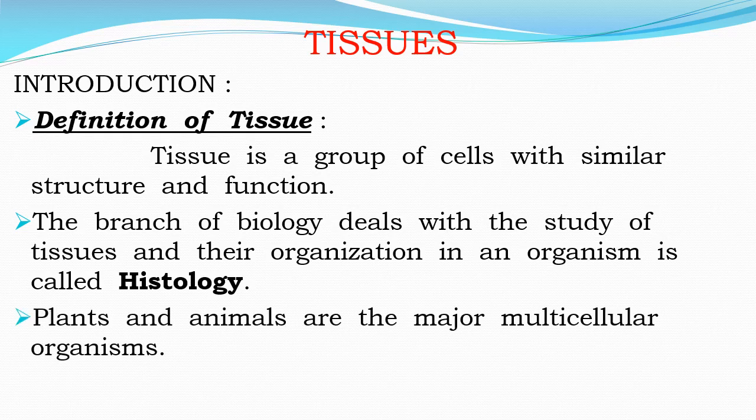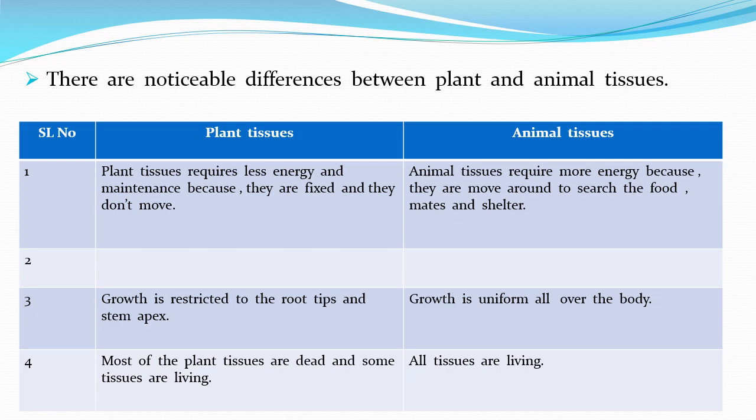Plants and animals are the major multicellular organisms, and therefore they need specific organ systems. Each organ system has a set of organs, and these organs are formed by different kinds of tissues. However, the tissues in plants and animals are different from each other — plant tissues are not found in animals, and animal tissues are not found in plants.